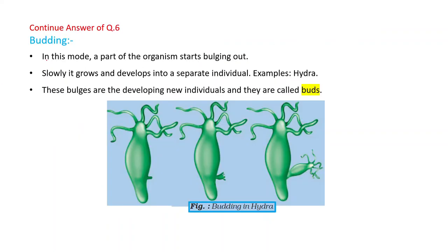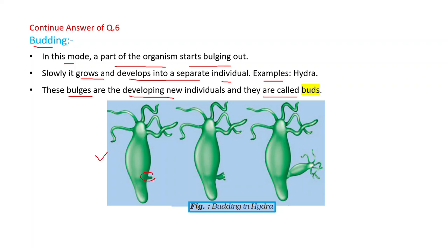Another example of asexual reproduction is budding. In this mode, a part of the organism starts bulging out slowly, grows, and develops into a separate individual. For example, hydra — these bulges are the developing new individuals and are called buds. Draw this diagram: hydra with a bulge growing and finally converting into a new hydra.